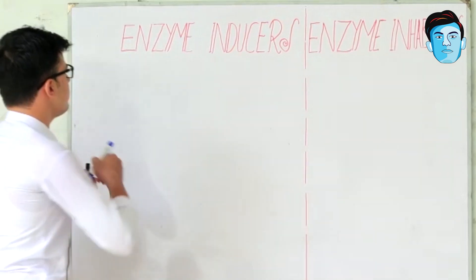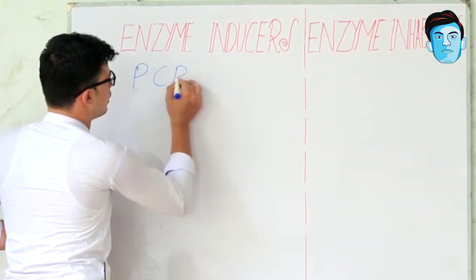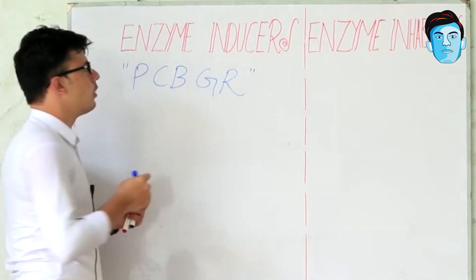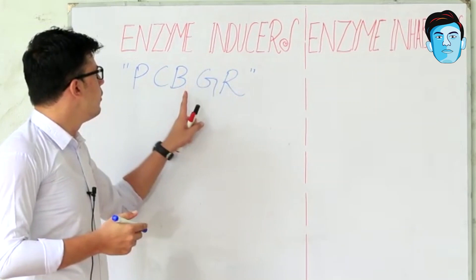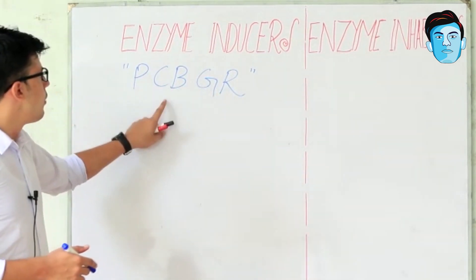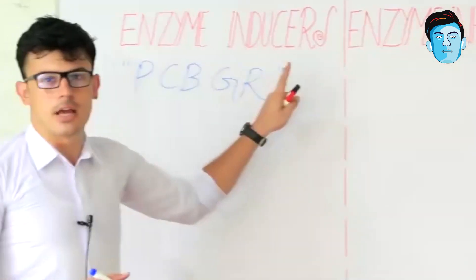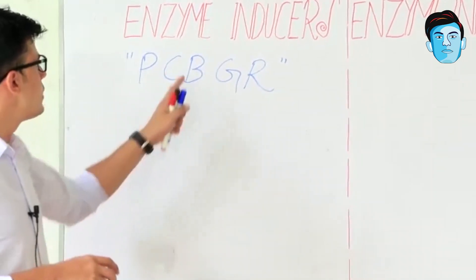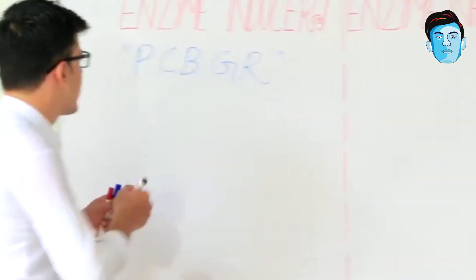For the enzyme inducers, we have a mnemonic: PCBGR. Every alphabet will indicate a particular enzyme inducer drug. So what is the trick to recall enzyme inducer drugs? That is PCBGR, where P stands for...